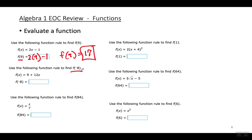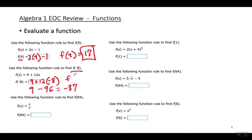En una función, tienen que sustituir el valor que está aquí dentro de la función donde quiera que esté esta variable. En este ejemplo estoy sustituyendo negativo ocho para x. Así que f de negativo ocho sería nueve más doce por negativo ocho. Siempre se tiene que seguir la orden de operaciones — aquí tengo que multiplicar primero: negativo ocho por doce sería negativo noventa y seis. Nueve menos noventa y seis me daría negativo ochenta y siete. Así que f de negativo ocho es igual a negativo ochenta y siete.